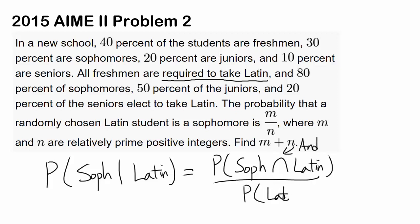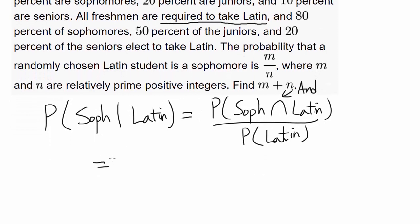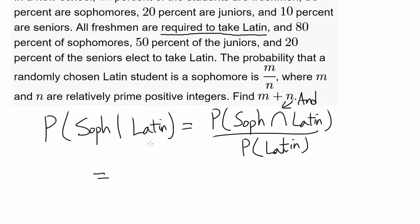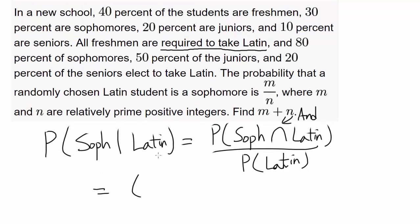So let's evaluate this. The probability that a student is a sophomore AND takes Latin: there's a 30% chance that a student picked is a sophomore, so 0.3, and the probability that they take Latin is 80%, so times 0.8, giving 0.24.